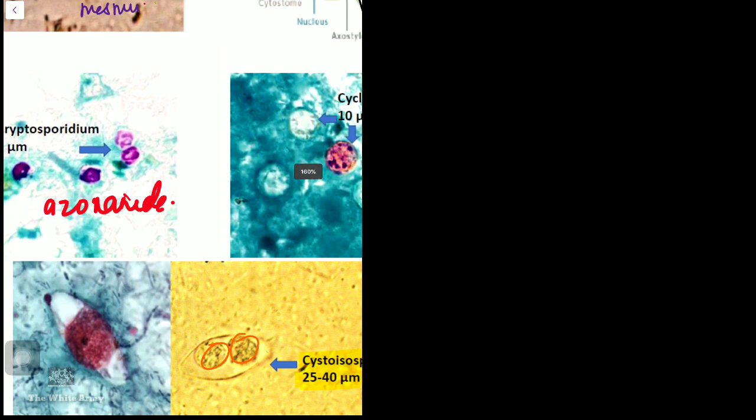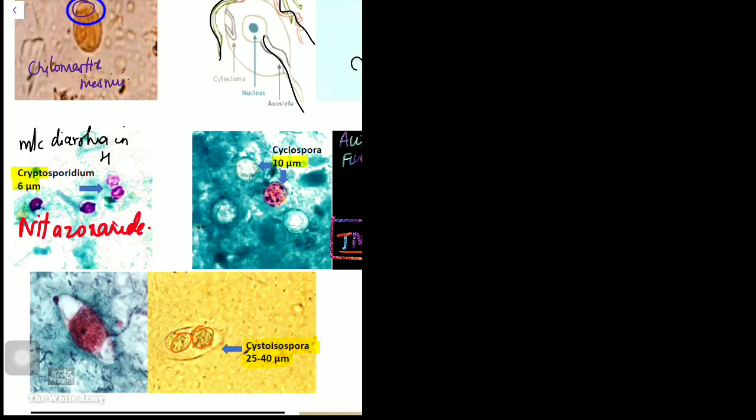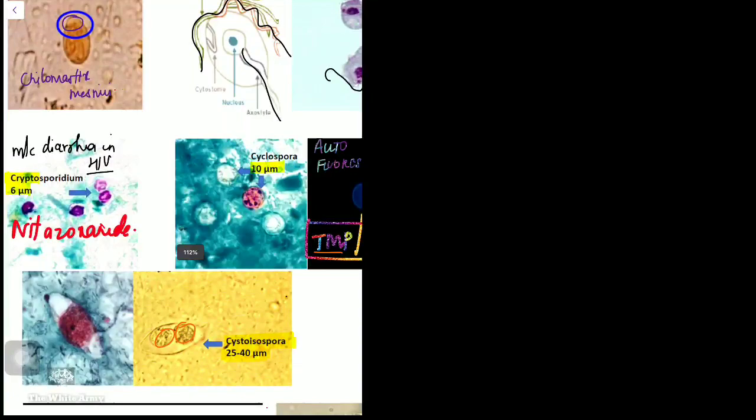Coming to coccidian parasites, which include three species: Cryptosporidium parvum (6 microns), Cyclospora (10 microns), and Isospora (25–40 microns). Cryptosporidium is treated with nitazoxanide and is one of the most common causes of diarrhea in HIV patients.